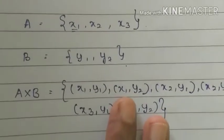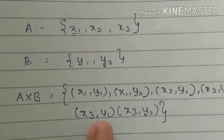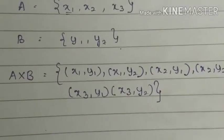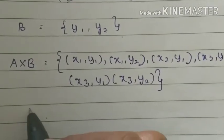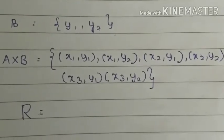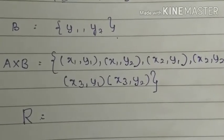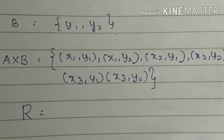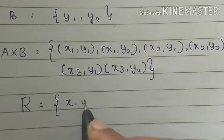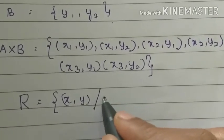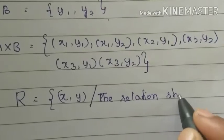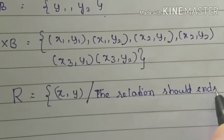Now what we need to do is explain the definition. We need to do the Cartesian product and explain the relation between the two sets. For example, the relation is x, y such that the relation should end with y2.